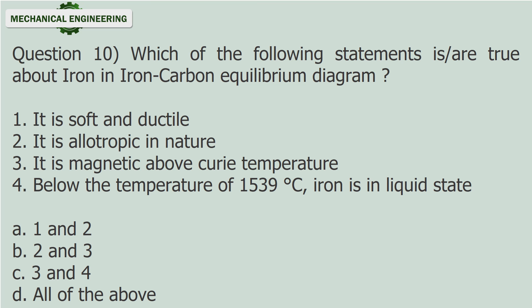Question 10: Which of the following statements are true about iron in the iron-carbon equilibrium diagram? 1. It is soft and ductile. 2. It is allotropic in nature. 3. It is magnetic above Curie temperature. 4. Below the temperature of 1539 degrees Celsius, iron is in liquid state. A. 1 and 2. B. 2 and 3. C. 3 and 4. D. All of the above.